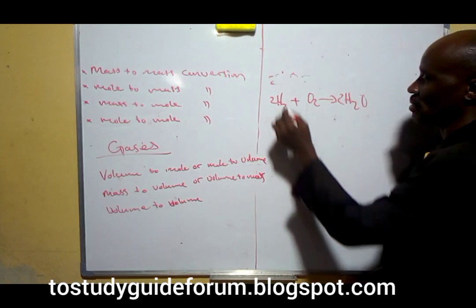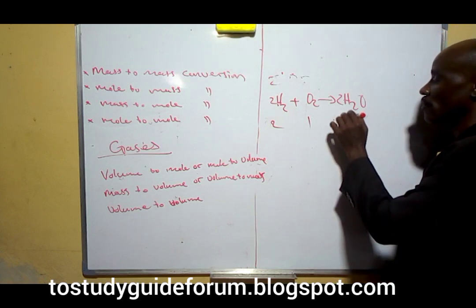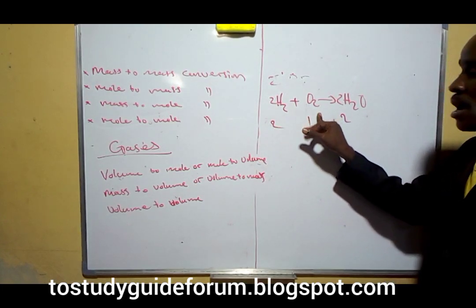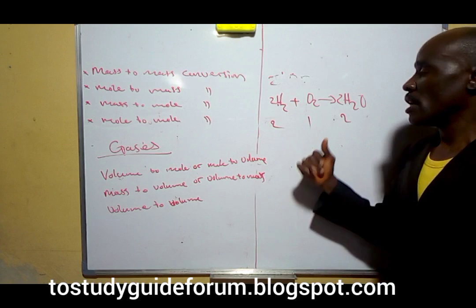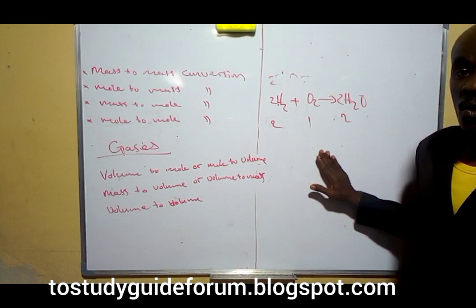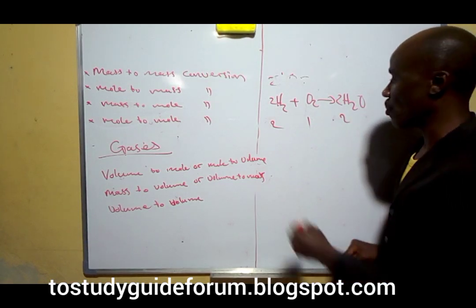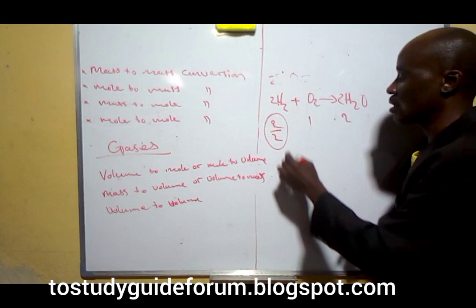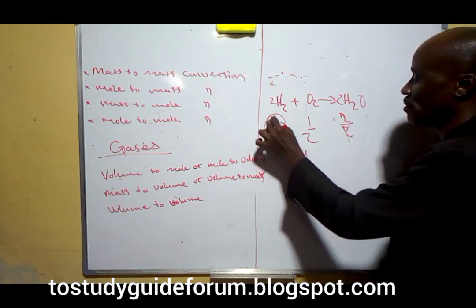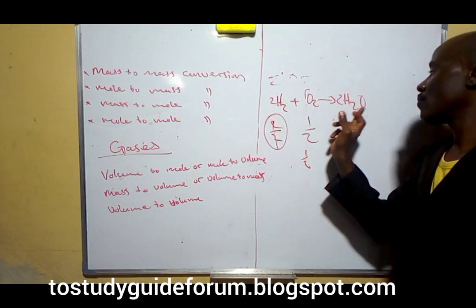From the balanced equation, we find out that two moles of hydrogen combine with one mole of oxygen to give us two moles of steam. With this conversion ratio, we can convert to different ratios in order to get what we want. For example, half the volume of oxygen reacts with hydrogen, and that gives us the same quantity of volume of steam.